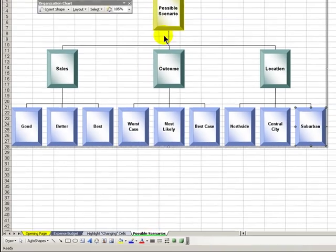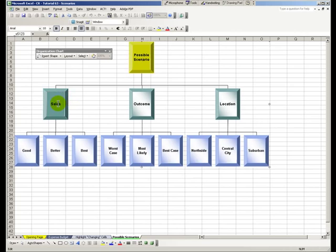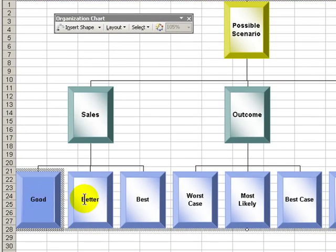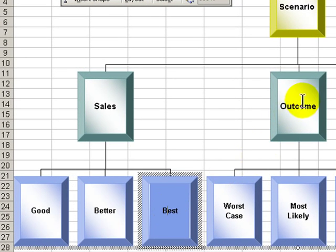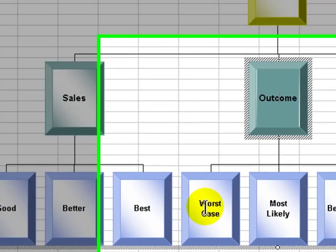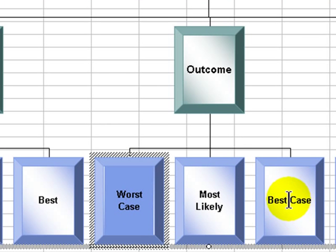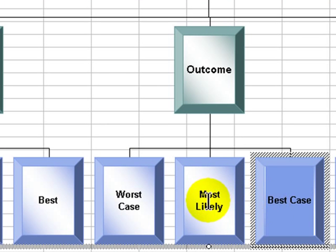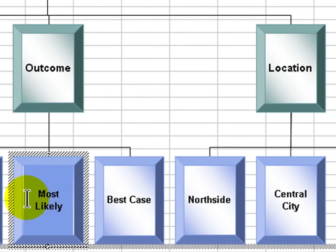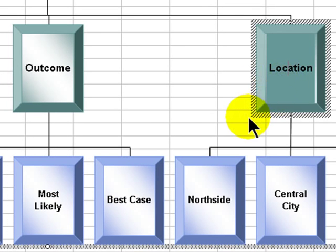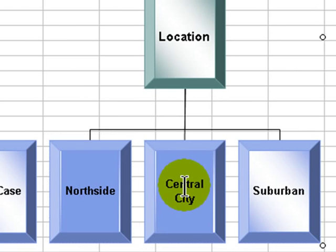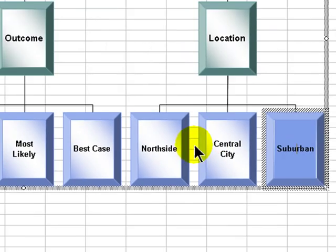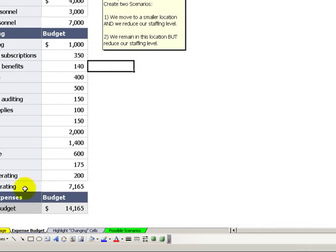Some other possible scenarios might include putting together a sales package: what would be a good buy, a better buy, or the best buy? Or predicting outcomes: if the worst happened, what would be the result? Or if everything went right, what's the best case outcome, or the outcome that is most likely? Another area for a scenario would be when thinking about relocating our office or home to the north side of the city, the central area, or moving out to the suburbs.